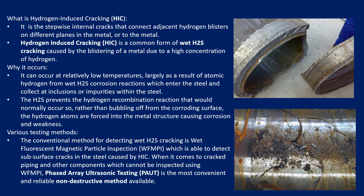Once hydrogen atoms are forced into the surface, it causes corrosion and weakness. There are a few tests available to identify this kind of cracking. The conventional method of detecting wet H2S cracking is wet fluorescent magnetic particle inspection, also called WFMPI, which is able to detect subsurface cracks in steel caused by hydrogen induced cracking. For piping and other components that cannot be inspected using WFMPI, phased array ultrasonic testing is generally used, which is the most convenient and reliable non-destructive testing method.